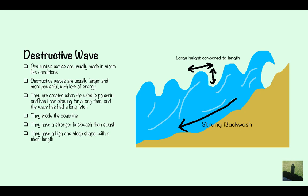Destructive waves are usually made in storm-like conditions. They are usually larger and more powerful with lots of energy. They're created when the wind is powerful and has been blowing for a long time and the wave has a long fetch. These are what erodes the coastline as they have a stronger backwash than swash, taking away the sediment. They have a high and steep shape but a short length.